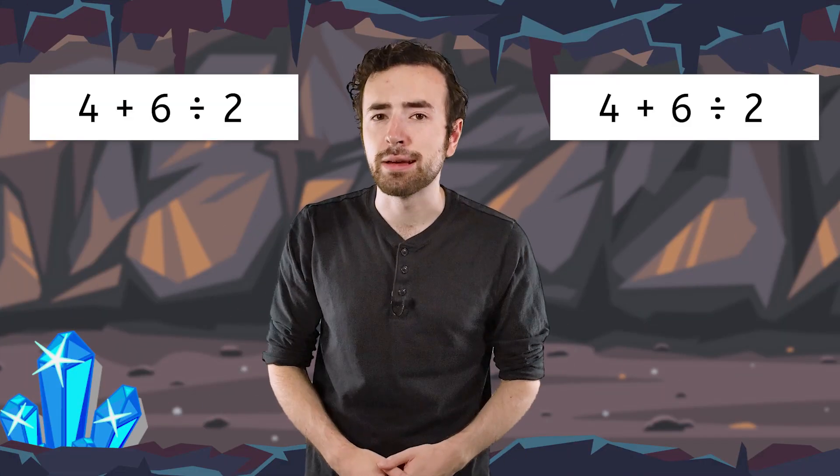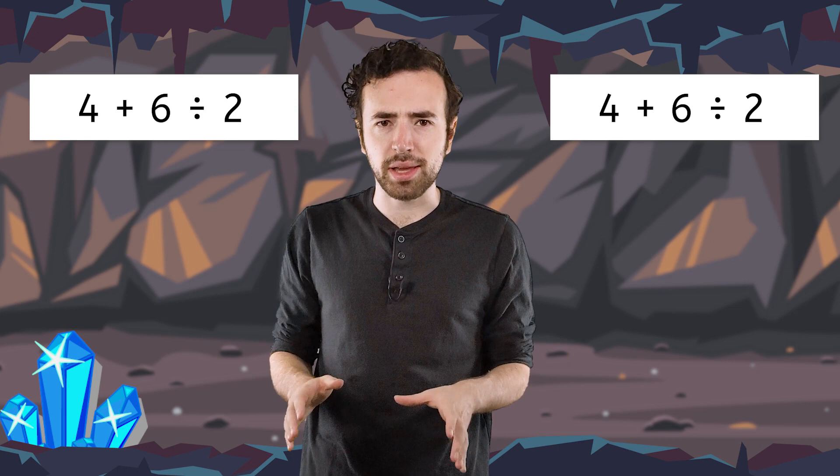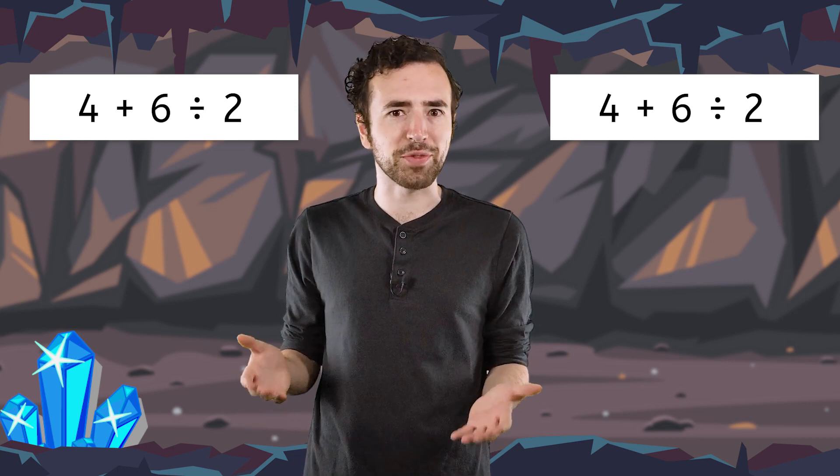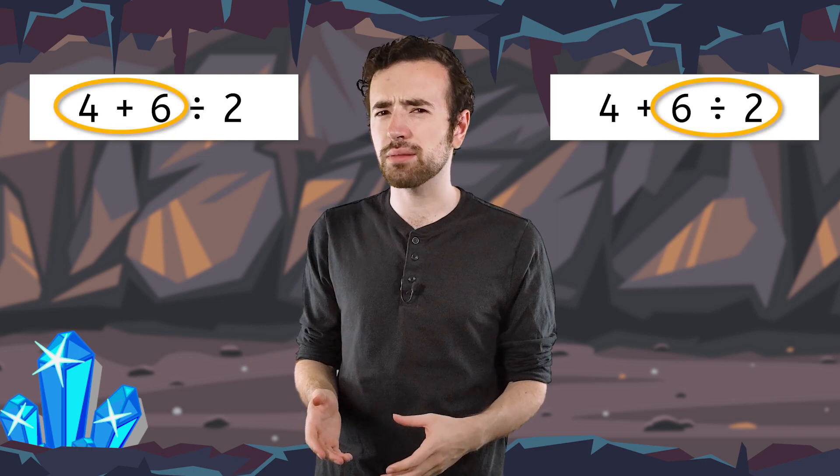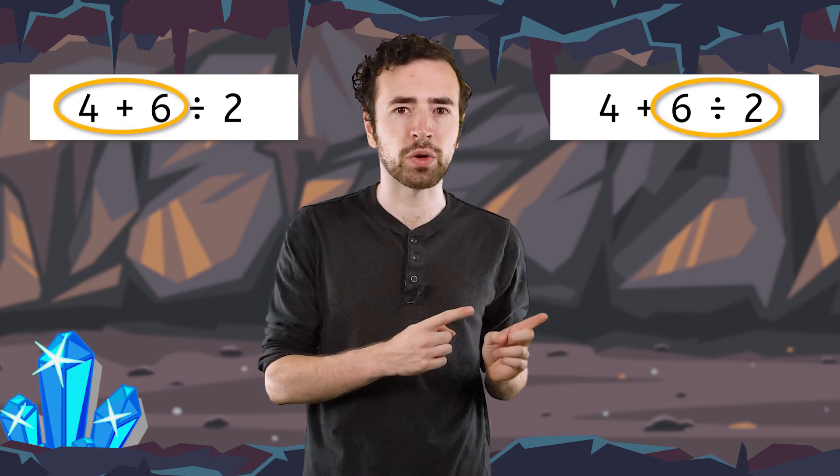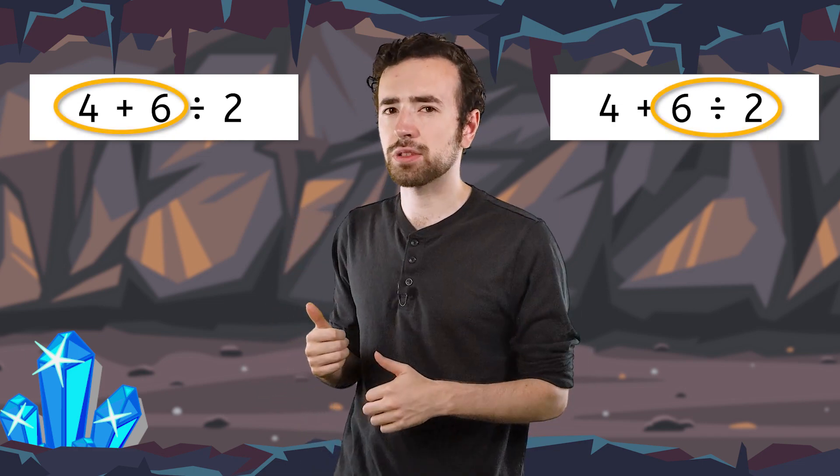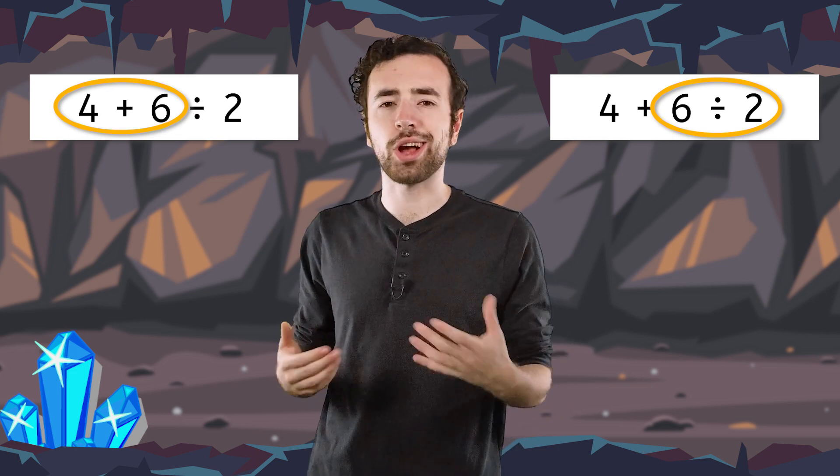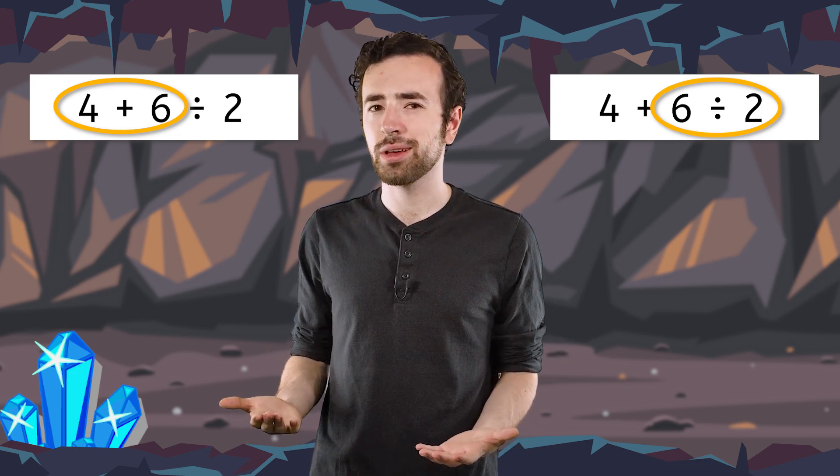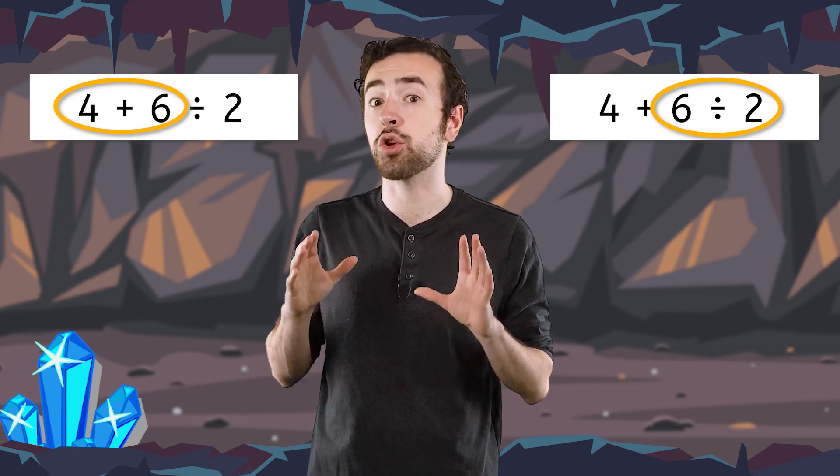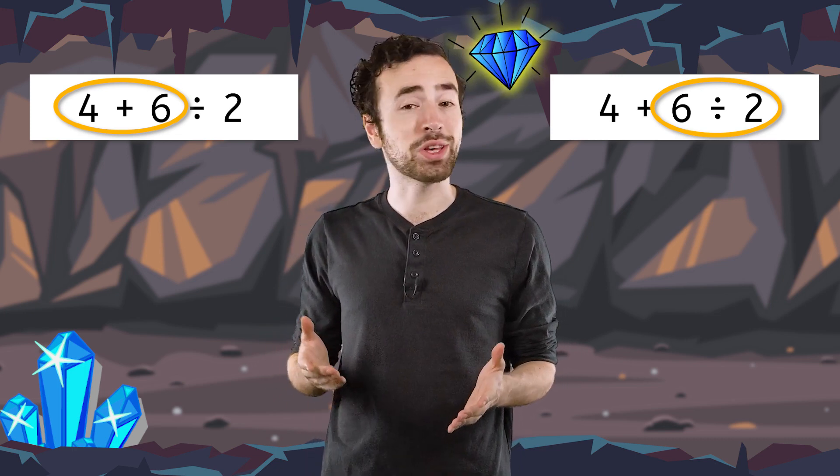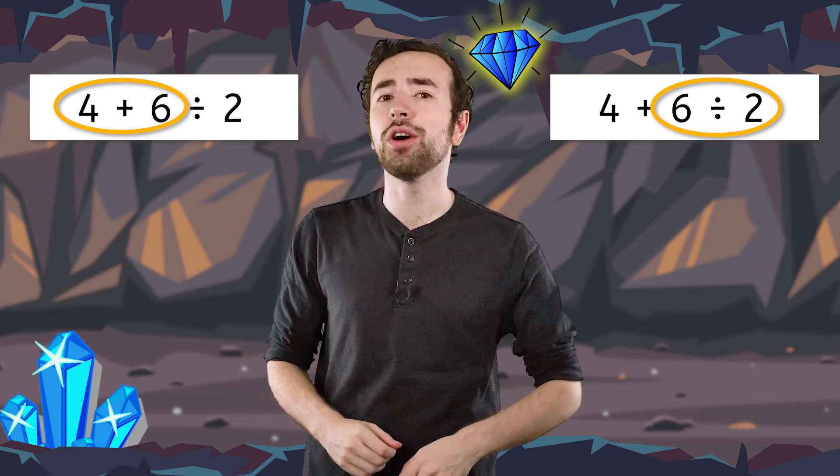Back to the mine. Mia and I solved the same problem, so why did we get different answers? Maybe it has something to do with how we solved it? Mia divided first, I added first. Do you think it matters which operation we started with? How can we be sure we are always solving problems correctly? We can utilize the order of operations.